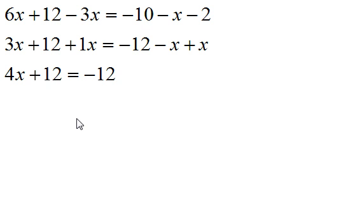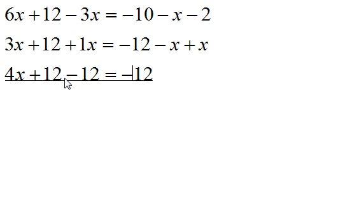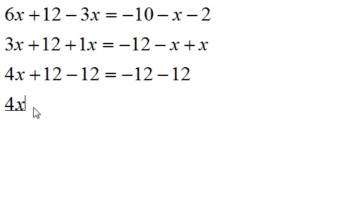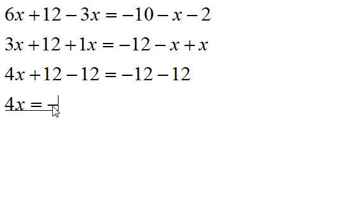The next thing I want to do is leave the 4x by itself on the left side of the equal sign, so I want to get rid of plus 12. I subtract 12 on both sides of the equation. Now combining like terms: 4x remains, and 12 minus 12 cancels out to 0. On the right side, minus 12 minus 12 gives minus 24.